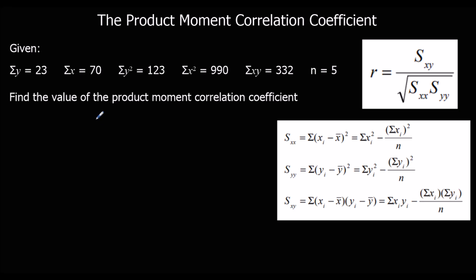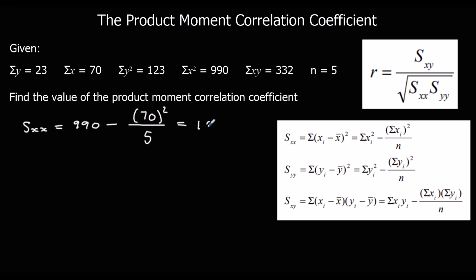So firstly, we're going to work out Sxx. Sxx is the sum of the x squareds, which is 990 this time, minus the sum of the x's squared — so 70 squared — over n, which is 5. That gives us an answer of 10. Syy is the sum of the y squareds, which is 123, minus the sum of the y's squared — so 23 squared — over n. That gives us 17.2.